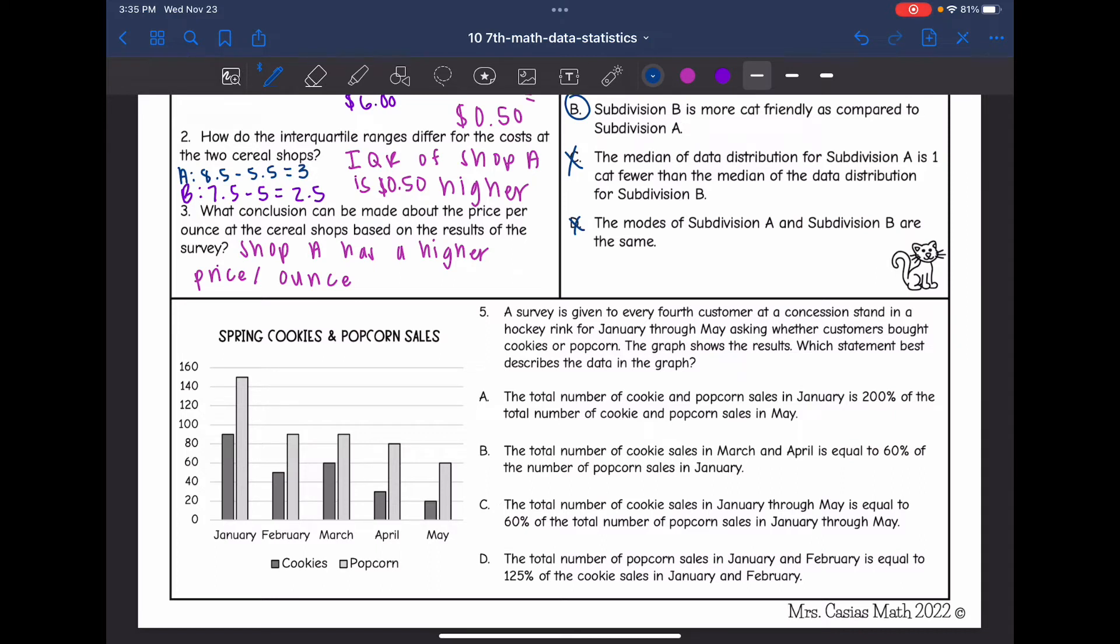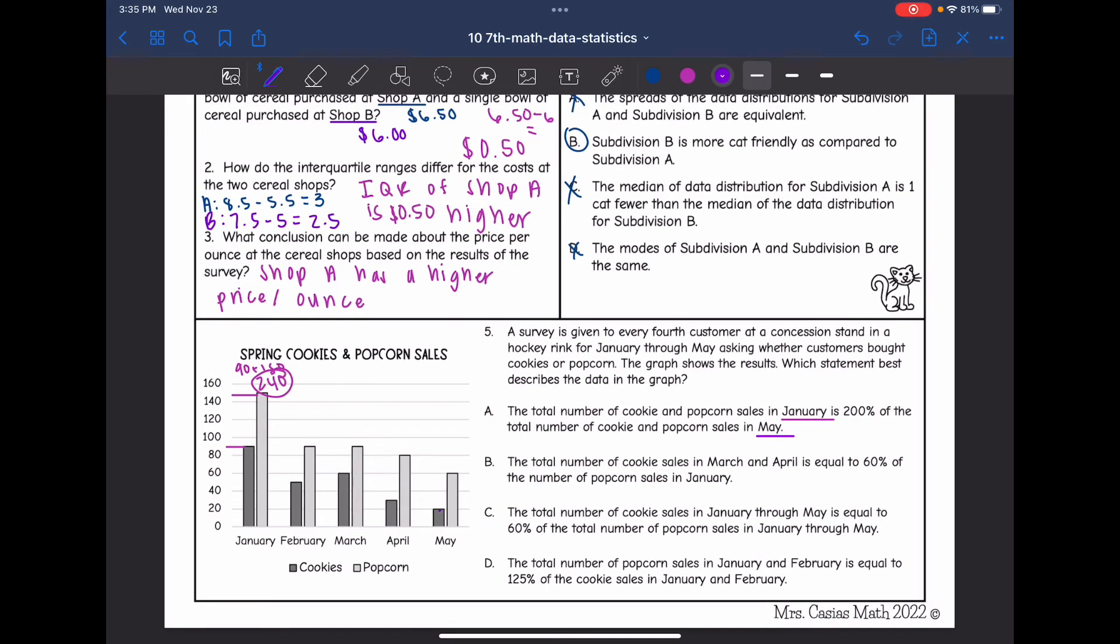A says the total number of cookie and popcorn sales in January is 200%, so twice the total number of cookie and popcorn sales in May. So let's figure out the cookie and popcorn sales in January. It would be 90 plus 150, which is 240. And then for May, it would be 20 plus 60, which is 80. So that's actually three times as much. It's not twice as much, it's 300%. So that one's not true.